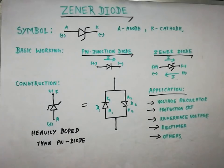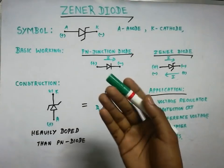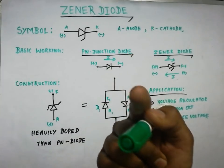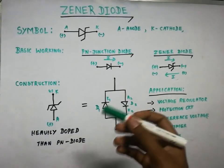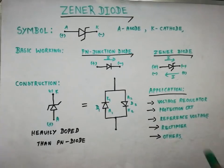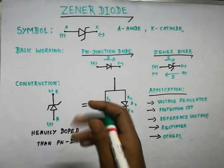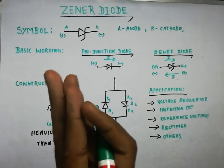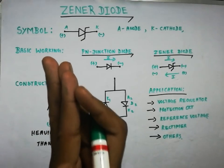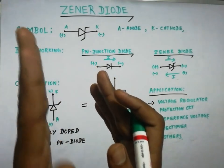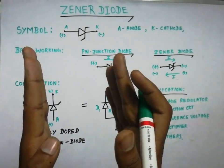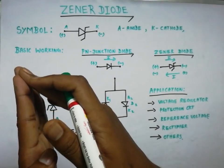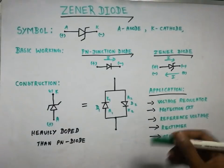The second application is protection circuits — specifically over-voltage protection. We can use the Zener diode for this. Another application is as a reference voltage. We can compare the main voltage with the reference voltage. This comparison is very useful — for example, in coding or control circuits, comparing main voltage versus reference voltage.